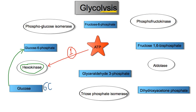Whenever you see the word 'kinase,' just remember that it attaches a phosphate from ATP onto a specified molecule. In this case, it attaches that phosphate onto the sixth carbon of glucose — hence the name glucose-6-phosphate. That's how this name came about.